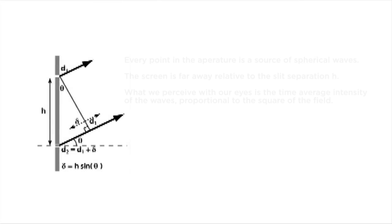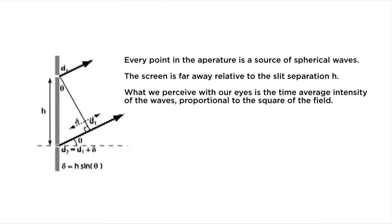If we make some assumptions about how light propagates, we can predict that the intensity pattern on a screen placed far from the slits will be proportional to the product of a sinc squared term due to the width of a single slit and a cosine squared term due to the separation of the two slits.